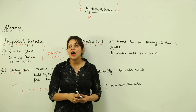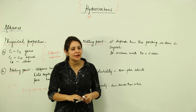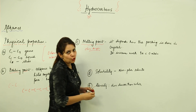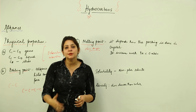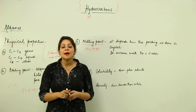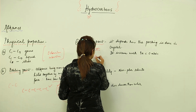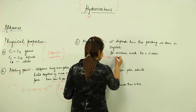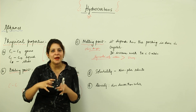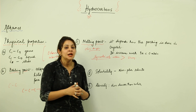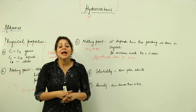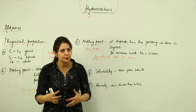For melting point, we need to consider how strongly the molecules are packed in the lattice. Generally, alkanes have low melting points since the packing is not too strong. However, symmetrical alkanes have a higher melting point compared to unsymmetrical ones, because symmetrical molecules can pack more closely in the lattice, resulting in stronger intermolecular interactions and a higher melting point.